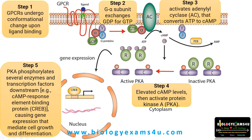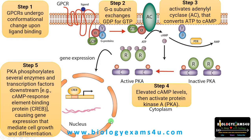Let me repeat once again. First, upon ligand binding, GPCR undergoes a conformational change. The G-protein exchanges GDP for GTP from its inactive state and becomes active. The active G-protein then activates adenylyl cyclase, an enzyme that converts ATP to cAMP. cAMP is a second messenger that activates protein kinase A. PKA then phosphorylates several enzymes and transcription factors downstream, ultimately causing gene expression that mediates cell growth and cell differentiation.